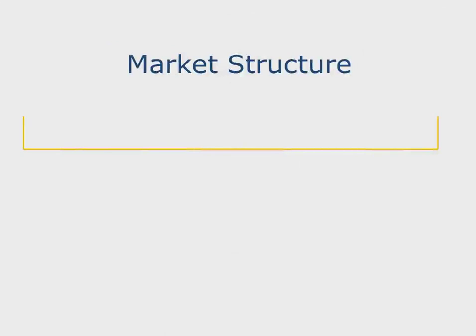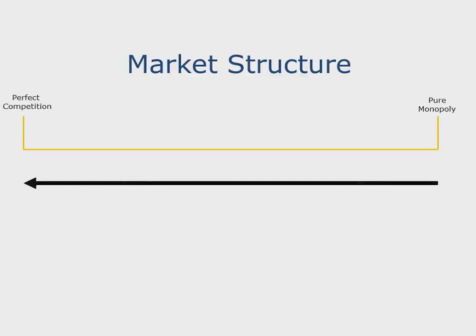With a given structure, on one extreme we have perfect competition and on the other end we have a pure monopoly. Under perfect competition we have a lot of firms selling homogeneous products, whereas under pure monopoly we only have one single firm selling a given product, and as such that firm constitutes the market. Moving from pure monopoly to perfect competition means we are drawing closer to a more competitive environment.